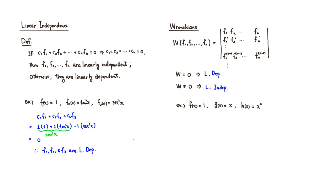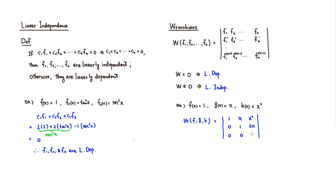Let's look at this example: f(x) = 1, g(x) = x, h(x) = x². We find the Wronskian of f, g, h. This is the determinant of the matrix: first row is 1, x, x²; second row (first derivatives) is 0, 1, 2x; third row (second derivatives) is 0, 0, 2.